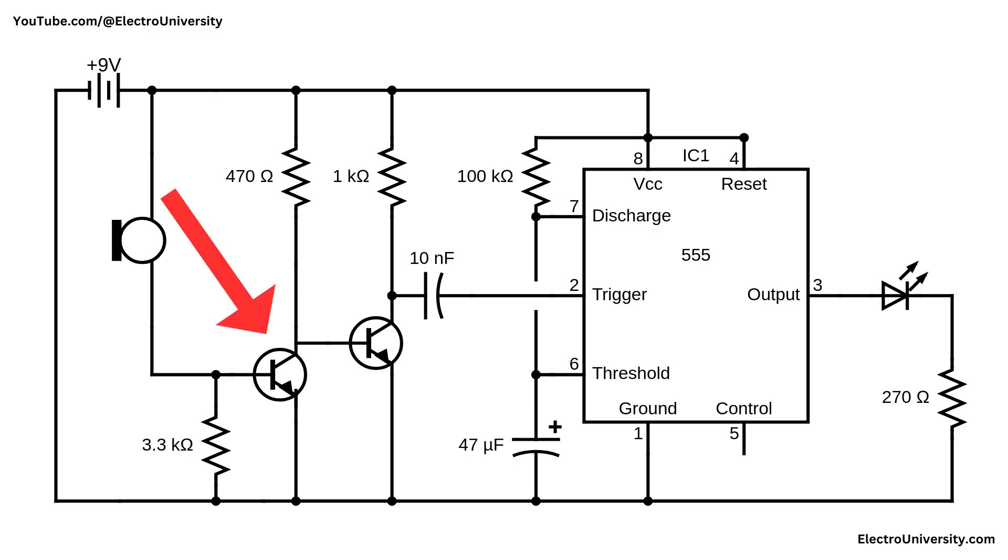The first transistor is biased using a 470 ohm resistor at the collector and a 3.3 kilo ohm resistor at the base, while the second transistor receives its base input through a 1 kilo ohm resistor. The amplified signal at the second transistor's collector is then passed through a 10 nanofarad capacitor to block DC and send only the brief sound pulse to the 555 timer's trigger, or pin 2. The 555 timer is configured in monostable mode, meaning it produces a single output pulse for a fixed duration when triggered.